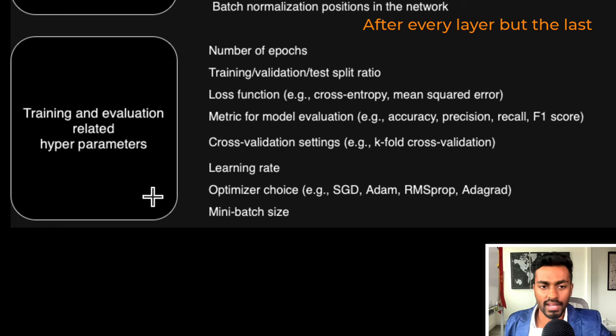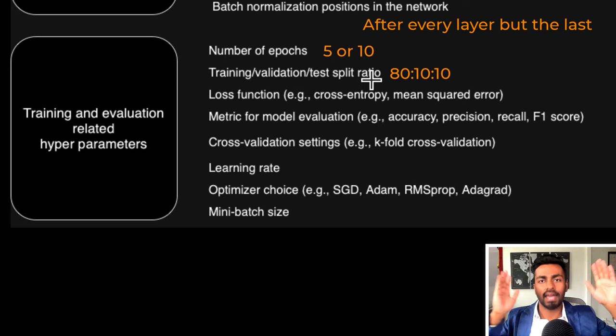If we go into the training and evaluation related hyperparameters, the number of epochs during training could be set to somewhere starting at 5 and then increase to 10 potentially. Then training and validation test split ratio. If we have an entire dataset we could probably split it up into 80-20 if we are just training and then testing. But if you want to do evaluation you can do 80-10-10 or a 70-20-10 split.